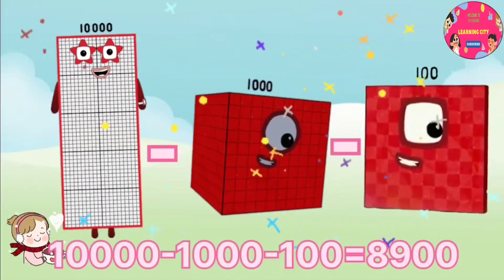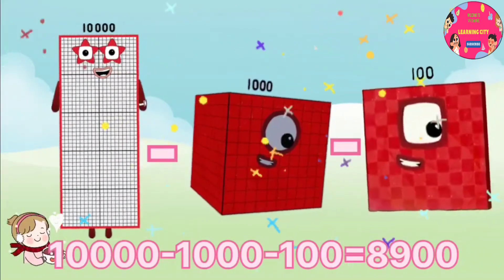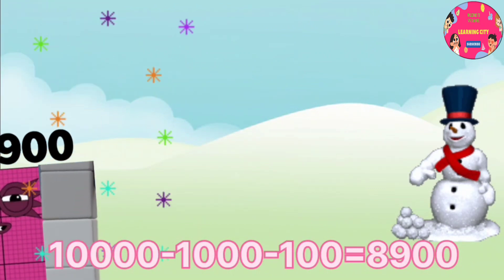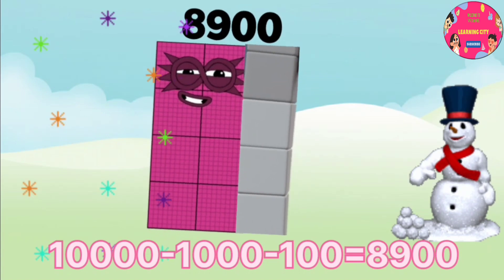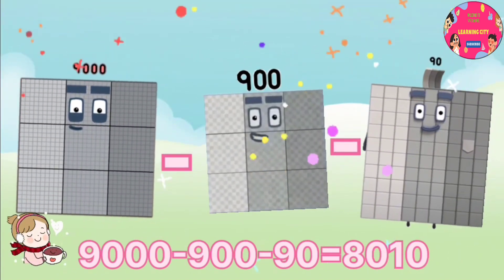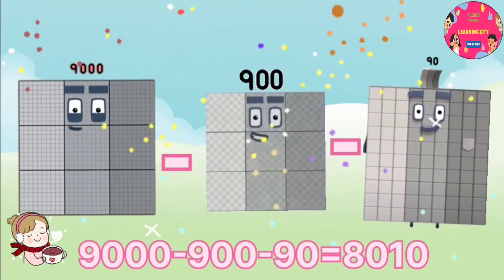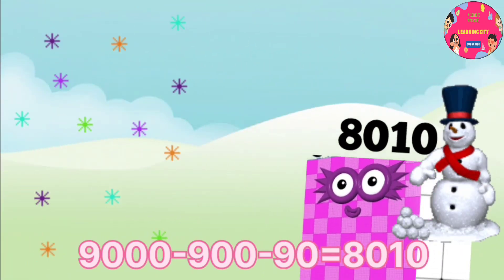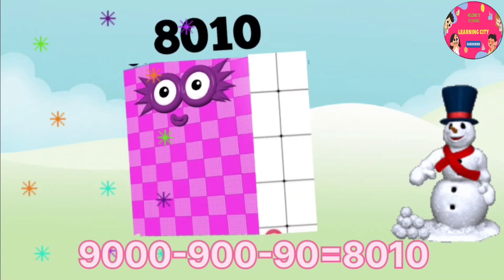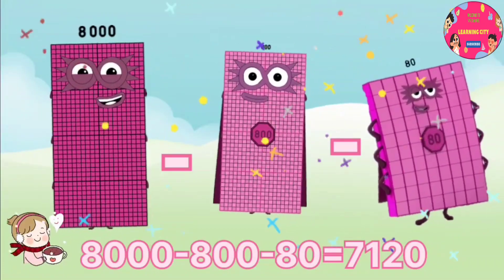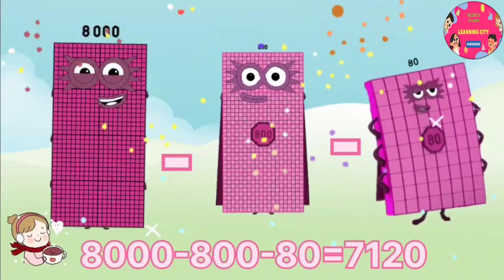10,000 minus 1,000 minus 100 equals 8,900. 9,000 minus 900 minus 90 equals 8,010. 8,000 minus 800 minus 80 equals 7,120.